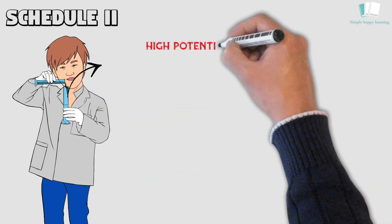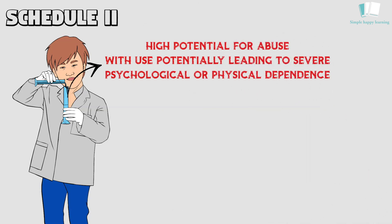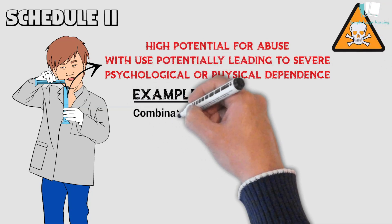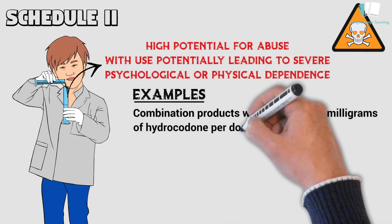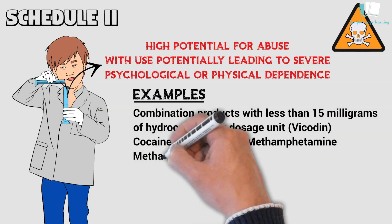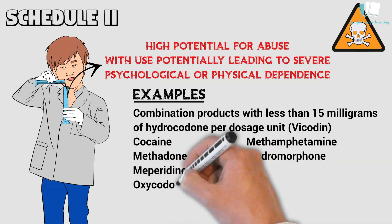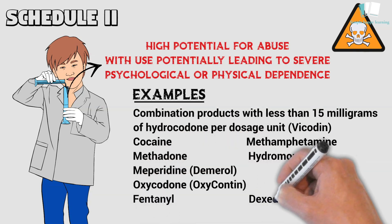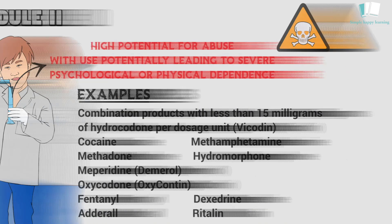Schedule 2: Schedule 2 drugs, substances, or chemicals are defined as drugs with a high potential for abuse, with use potentially leading to severe psychological or physical dependence. These drugs are also considered dangerous. Some examples of Schedule 2 drugs are combination products with less than 15 milligrams of hydrocodone per dosage unit (Vicodin), cocaine, methamphetamine, methadone, hydromorphone, meperidine (Demerol), oxycodone (OxyContin), fentanyl, Dexedrine, Adderall, and Ritalin.